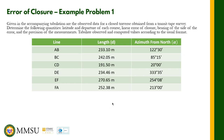Given in the accompanying tabulation are the observed data for a closed traverse obtained from a transit tape survey. Determine the following quantities: latitude and departure of each course, linear error of closure, bearing of the side of the error, and the precision of the measurement. Tabulate the observed and computed values accordingly.